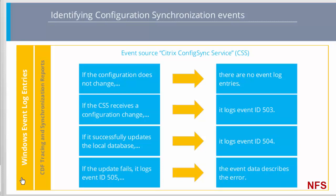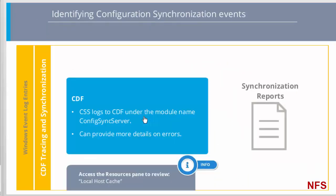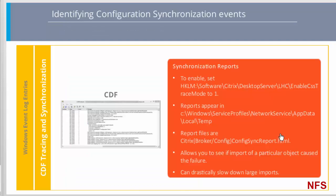There may be situations where a deeper investigation of configuration synchronization is required, and for this we will need CDF traces. How can we troubleshoot configuration synchronization by analyzing CDF traces? The CSS logs to CDF under the module name Config Sync Server. So look for errors in this module because it can provide additional details about the possible cause. Configuration synchronization is performed by Citrix SDK calls. Synchronization reports that log the sequential SDK calls can be generated and written to HTML format. Be aware that synchronization reports should only be enabled while generating the data for analysis, as it creates a significant overhead and would drastically slow down CSS synchronization in large sites.